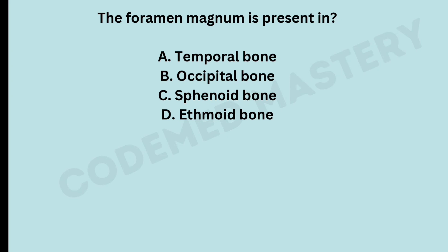The foramen magnum is present in — option A: temporal bone, option B: occipital bone, option C: sphenoid bone, option D: ethmoid bone. The right answer is option B, occipital bone. The foramen magnum is located in the occipital bone, which forms the back and base of the skull. It is a large opening at the base of the skull through which the spinal cord passes and connects with the brain.